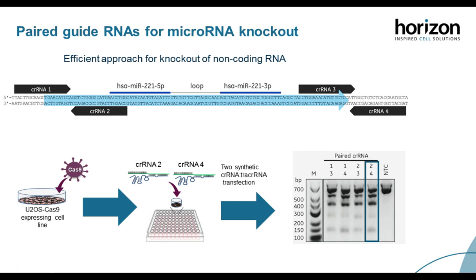Moving on to our next application: knocking out a microRNA. MicroRNAs are non-protein-coding RNAs important in gene regulation, but they differ from protein-coding genes because they are much smaller, so the sequence space to design a guide RNA is limited. It is unknown if small indels in the stem loop are disruptive enough to effectively knock out microRNA function, so using two guide RNAs flanking the microRNA is an efficient approach. We generated Cas9-expressing U2OS cells using lentiviral Cas9 and transfected them with a pair of CRISPR RNAs flanking microRNA 221, observing similar editing levels for all pairs tested.